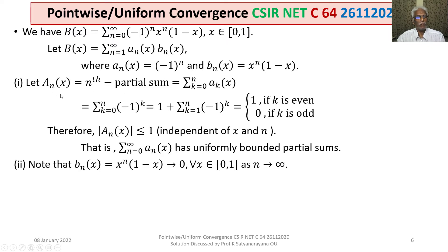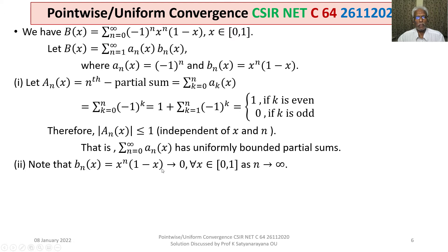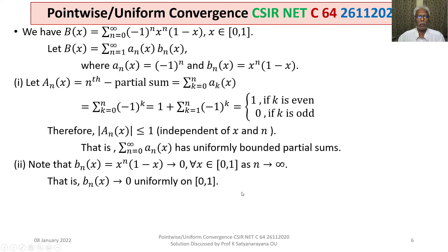For condition 2: b_n(x) = x^n · (1−x) tends to 0 for all x in [0, 1] as n→∞. If x=0, the term is 0; if x=1, (1−x)=0; if x is in the open interval (0,1), x^n→0 as n→∞. Thus b_n(x)→0 uniformly on [0, 1], so the second condition is satisfied.